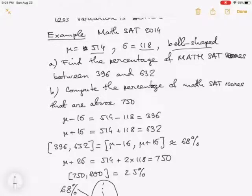Find the percentage of math SAT scores between 396 and 632, and compute the percentage of math SAT scores that are above 750. We see that mu minus 1 sigma is 514 minus 118, which is exactly 396, and mu plus 1 sigma is 632.